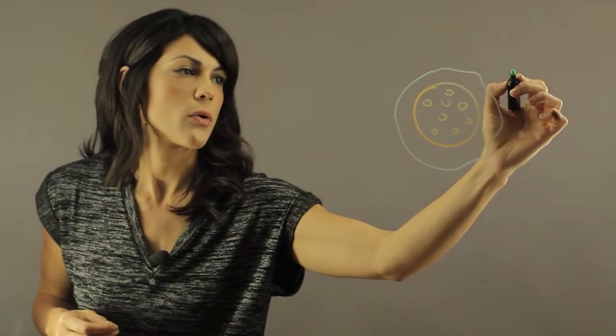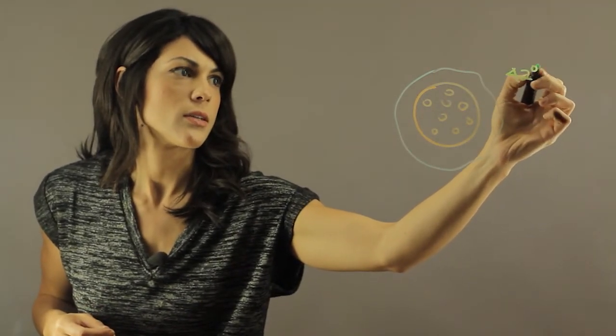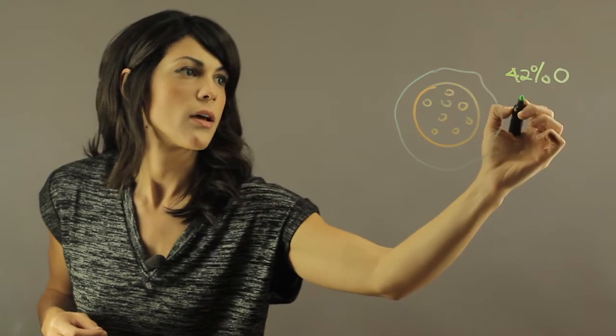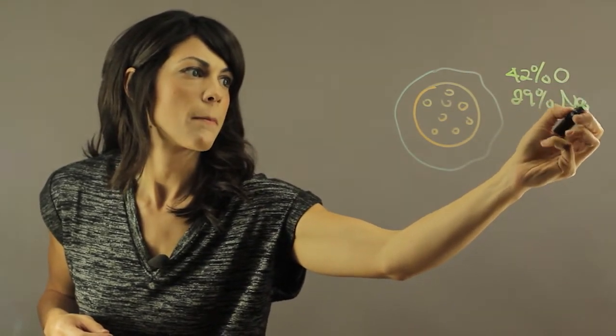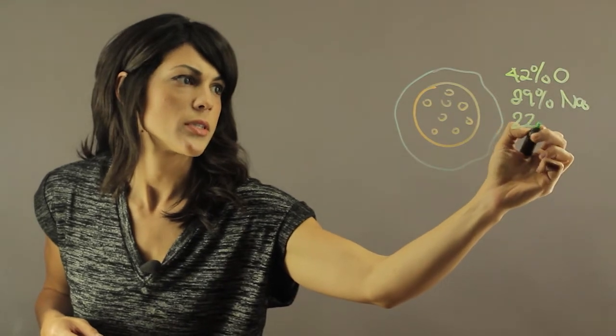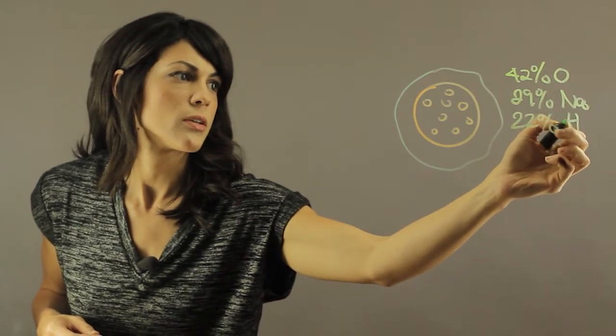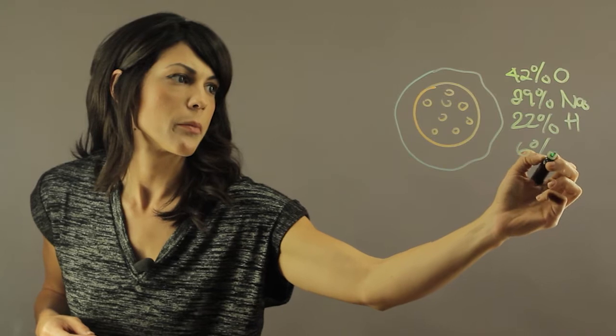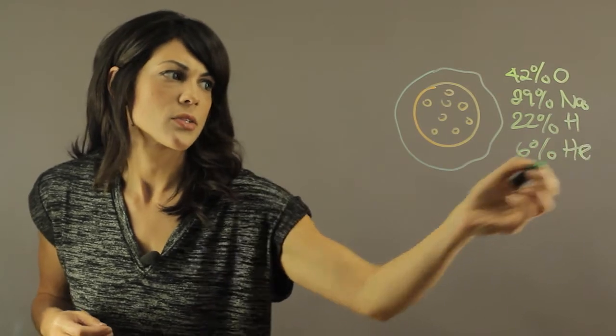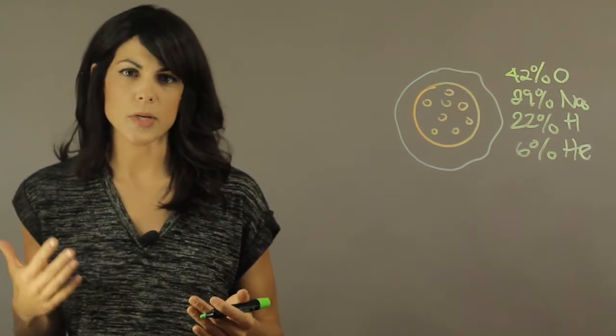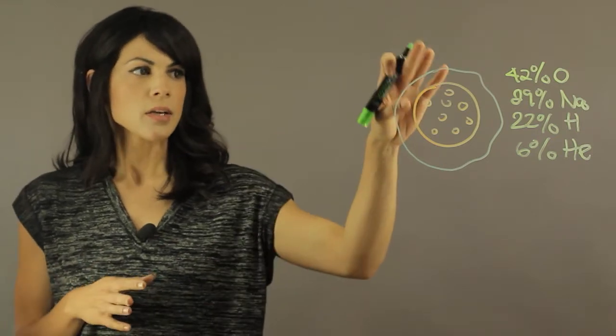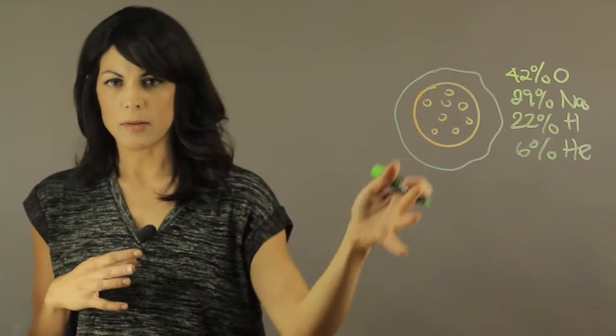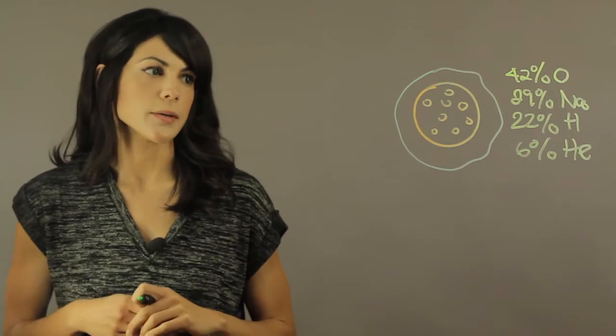So the composition is about 42 percent oxygen, about 29 percent sodium, and then it has 22 percent hydrogen with about 6 percent helium. Then it also has a little bit of potassium and some carbon dioxide and a couple of traces of different types of gases. But it has very little gas and this is about the average composition.